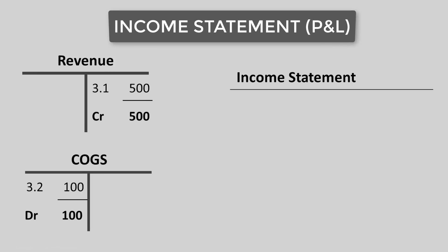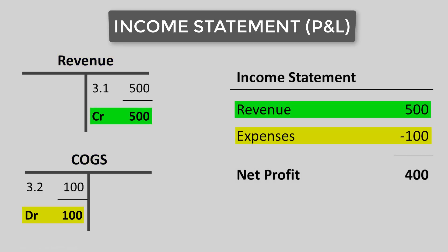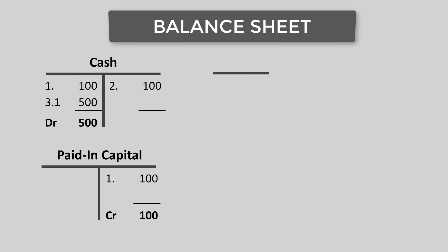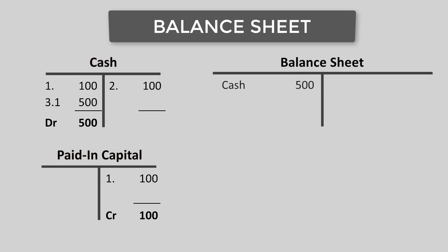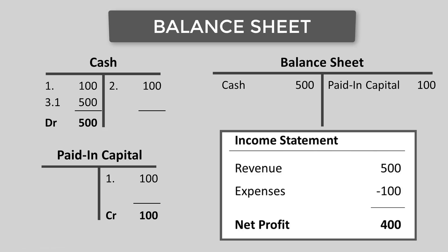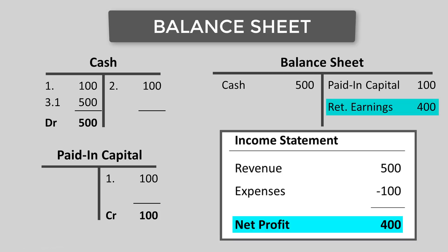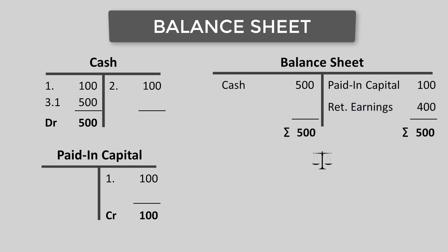Let's create Claudio's P&L. It includes revenues and expenses, so we just need the T-accounts for revenue and COGS. The closing balances flow into our simplified P&L, and we calculate a net profit of 400. For the balance sheet, only cash and paid-in equity are relevant because inventory's closing balance is zero. Cash is an asset on the debit side; paid-in equity goes to the credit side. As we said in our introduction video, net profit is the link between the P&L and the balance sheet — so the net profit of 400 flows into retained earnings on the credit side, and everything is balanced.